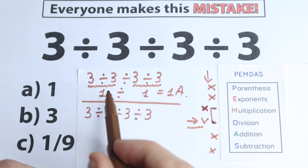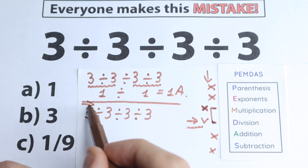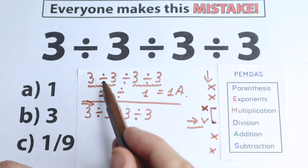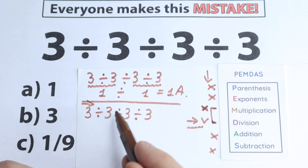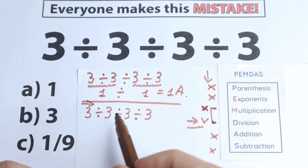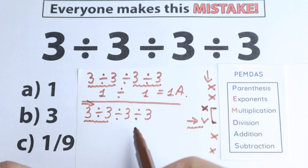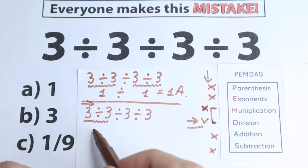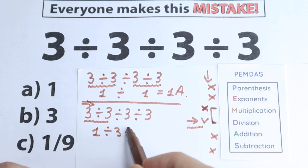We have only division, and we go from left to right — but in PEMDAS we cannot jump. We need to go from left to right with every operation sign in order. The first sign from left to right is this division, so we divide 3 divided by 3 first, which equals 1. Then we have 1 divided by 3, divided by 3.